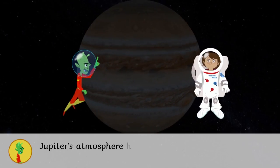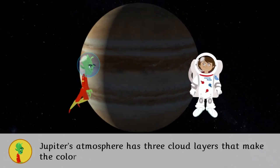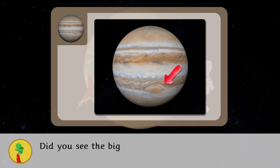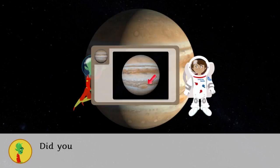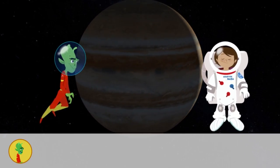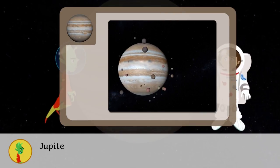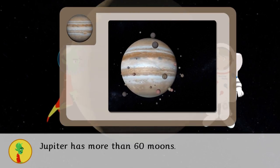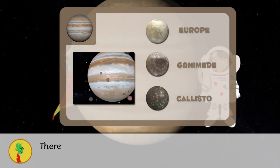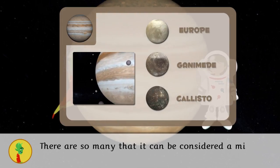Jupiter's atmosphere has three cloud layers that make the colours that we see. Did you see the big red spot? It is a huge storm. Did you know there have been seven aerial visits to Jupiter? Jupiter has more than 60 moons. The most famous are Europa, Ganymede and Callisto. There are so many that it can be considered a mini solar system.